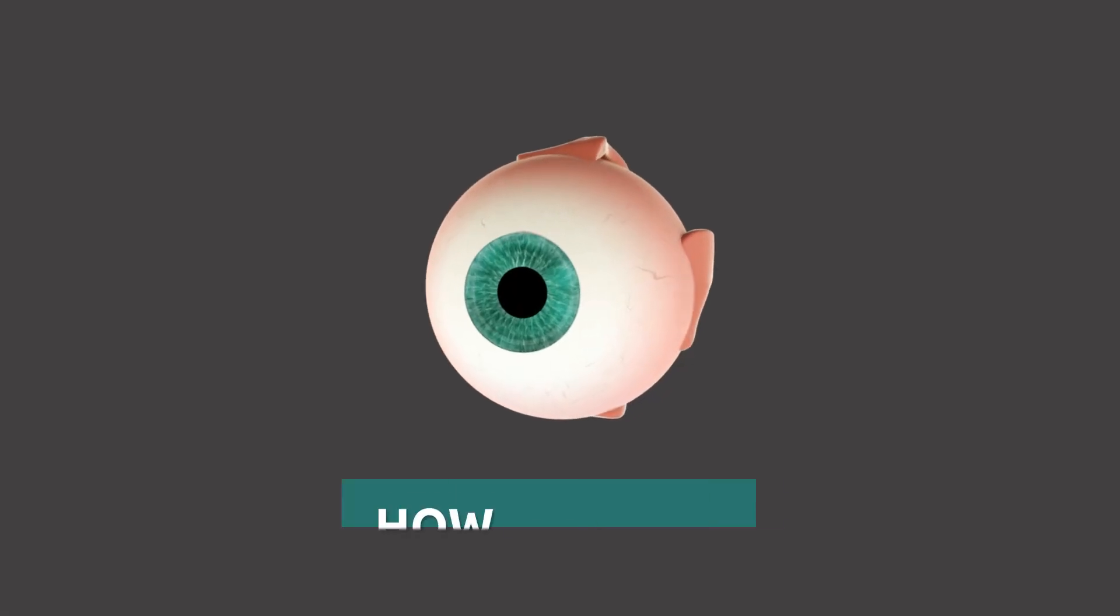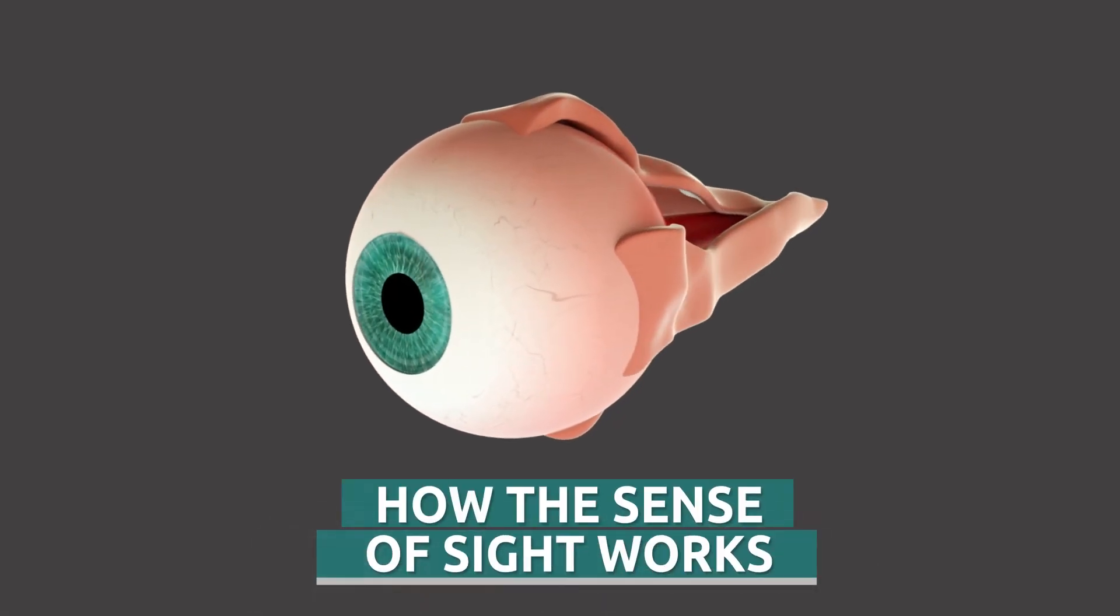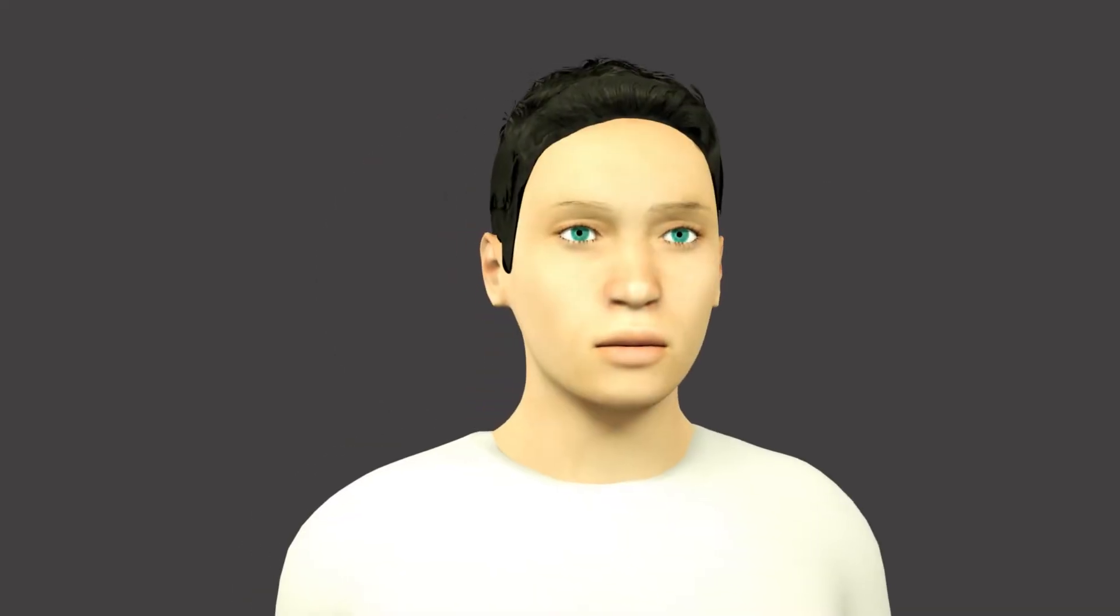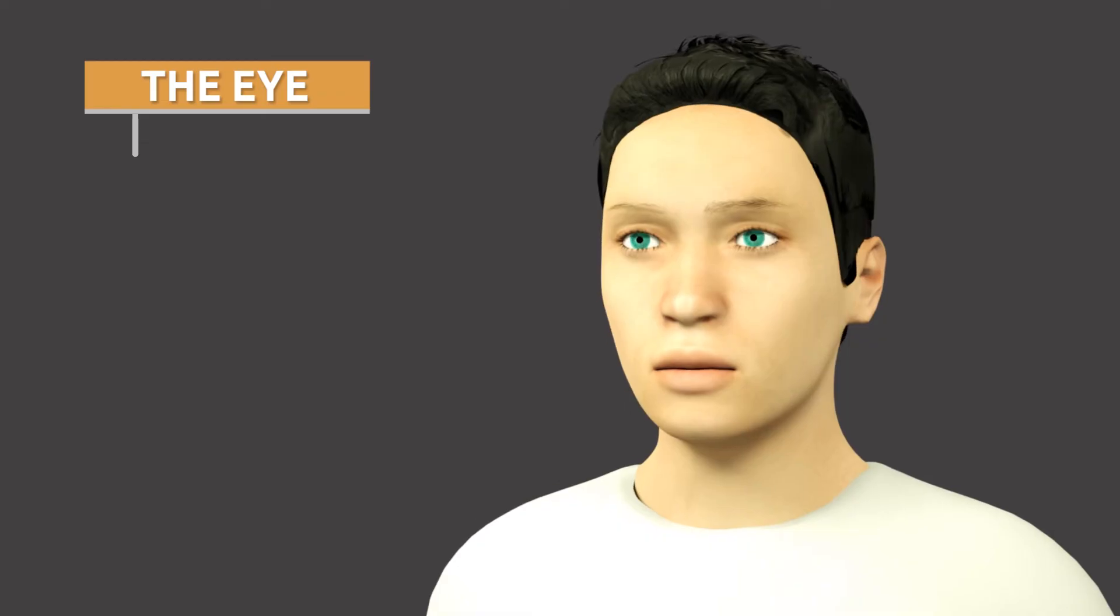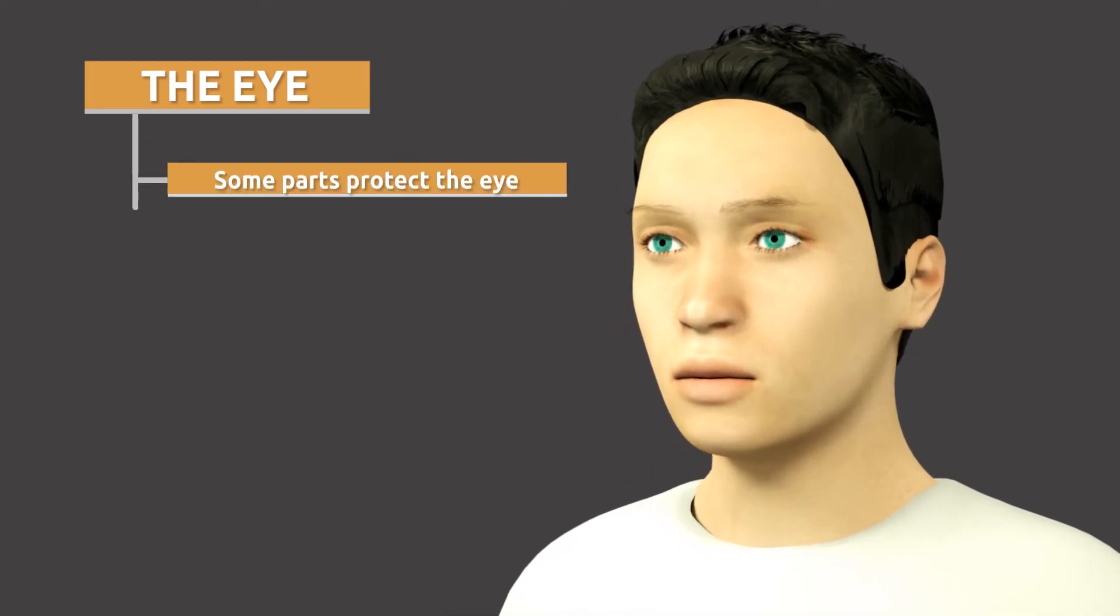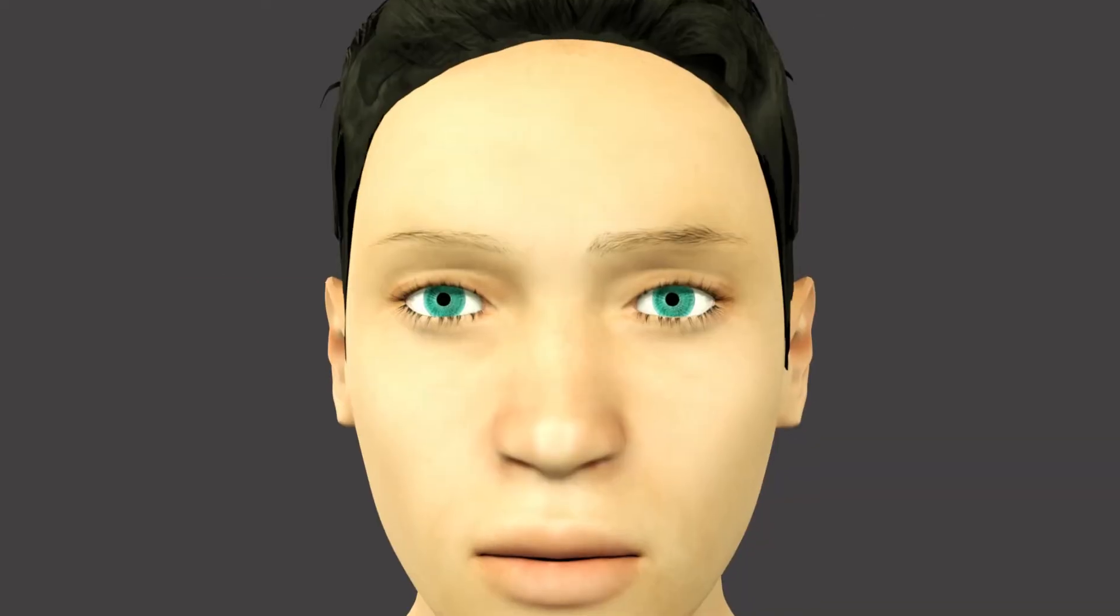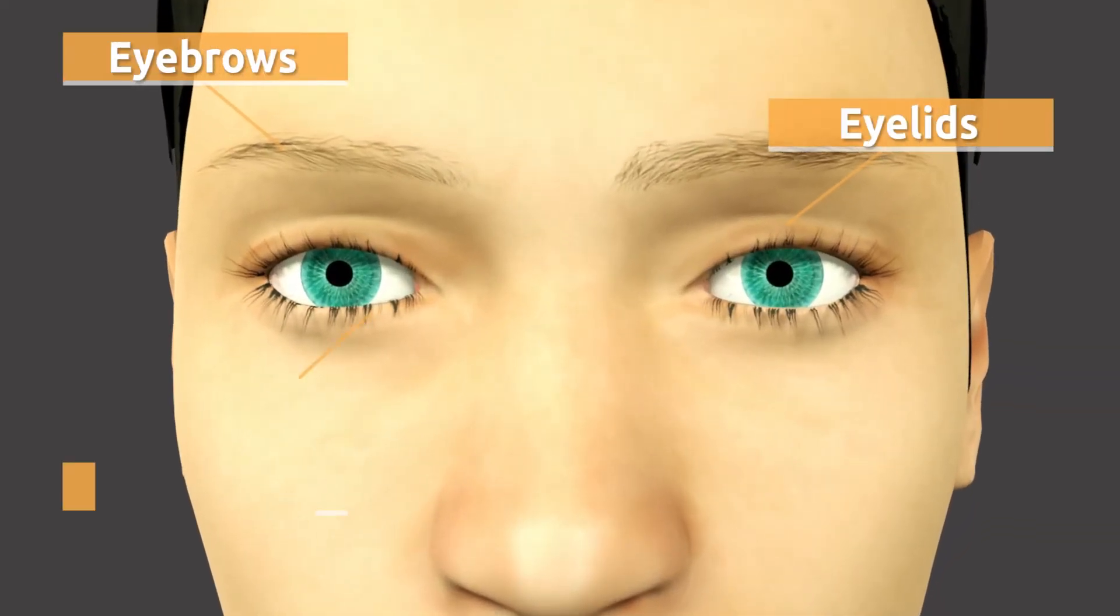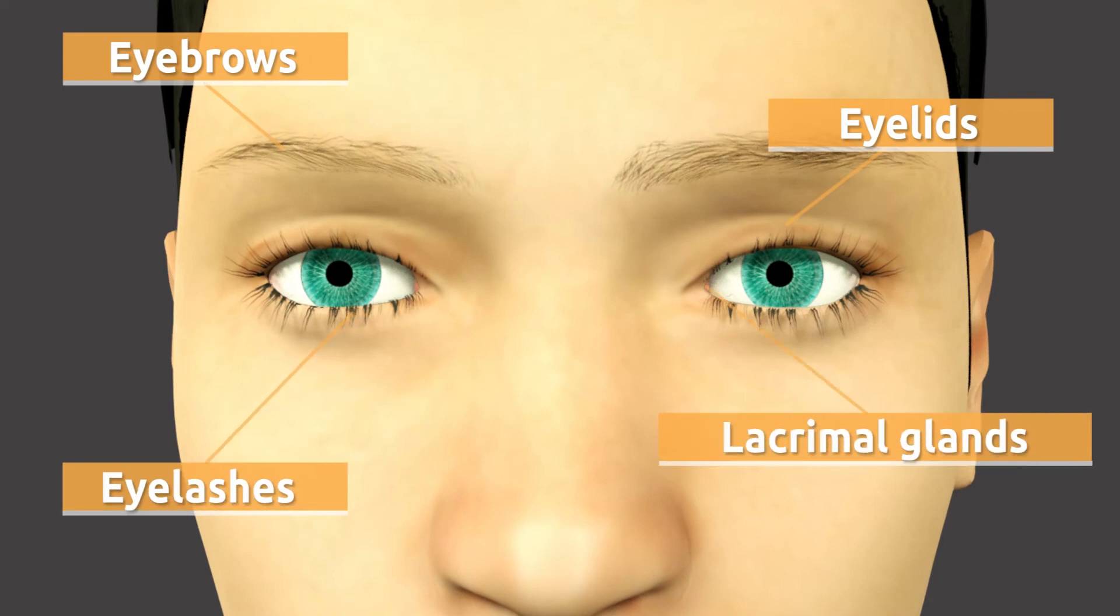Today we are going to learn how the sense of sight works. The human eye has different parts. Some parts protect the eye while other parts are in charge of vision. The parts that protect the eye are the eyebrows, the eyelids, the eyelashes, and the lacrimal glands.